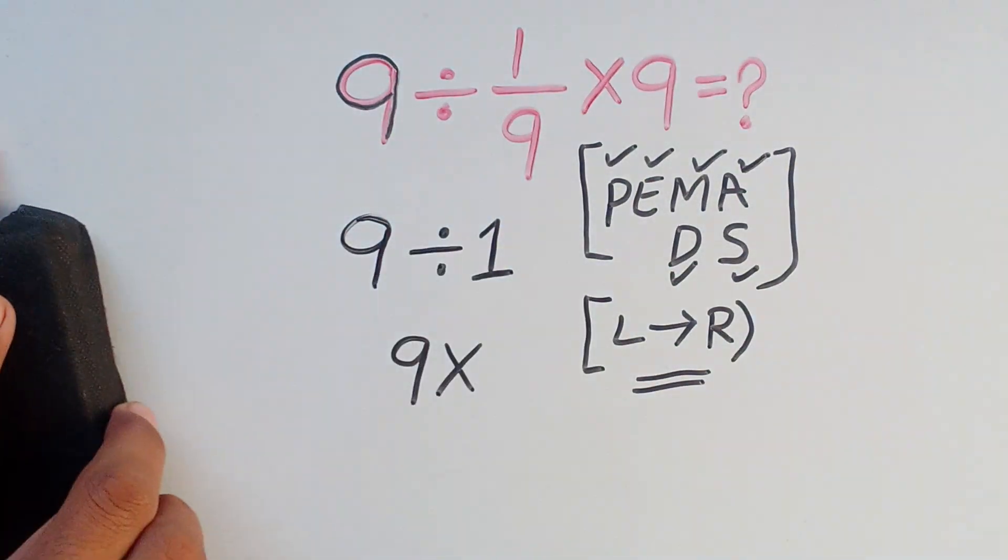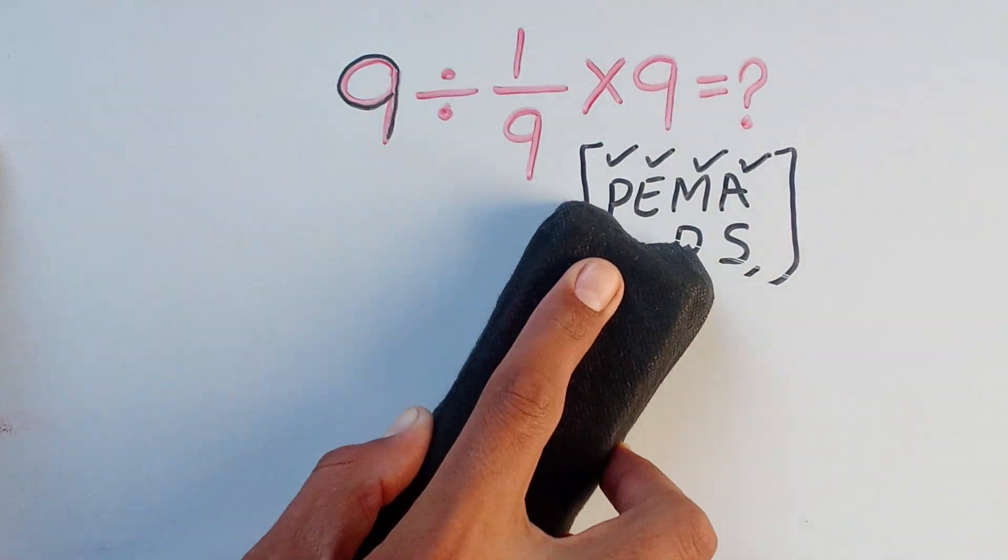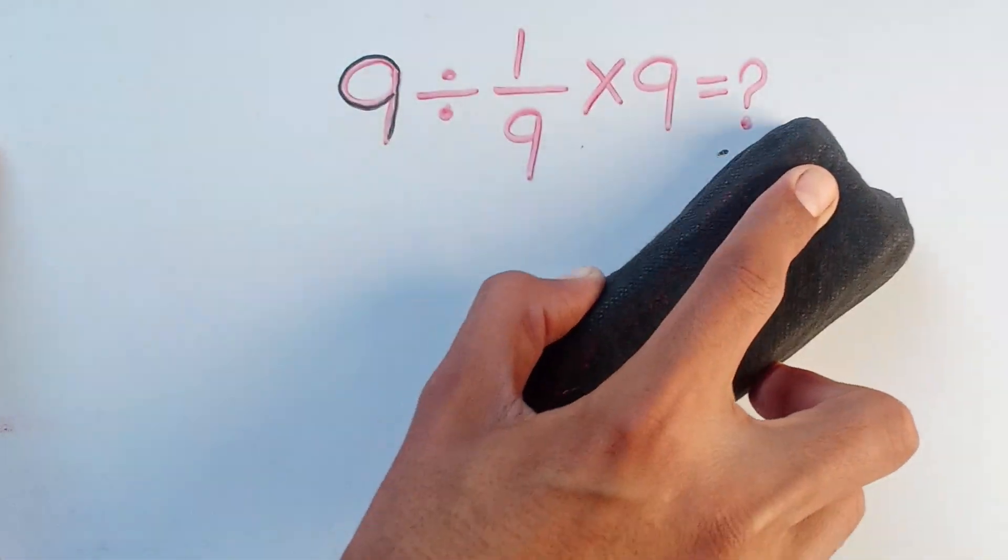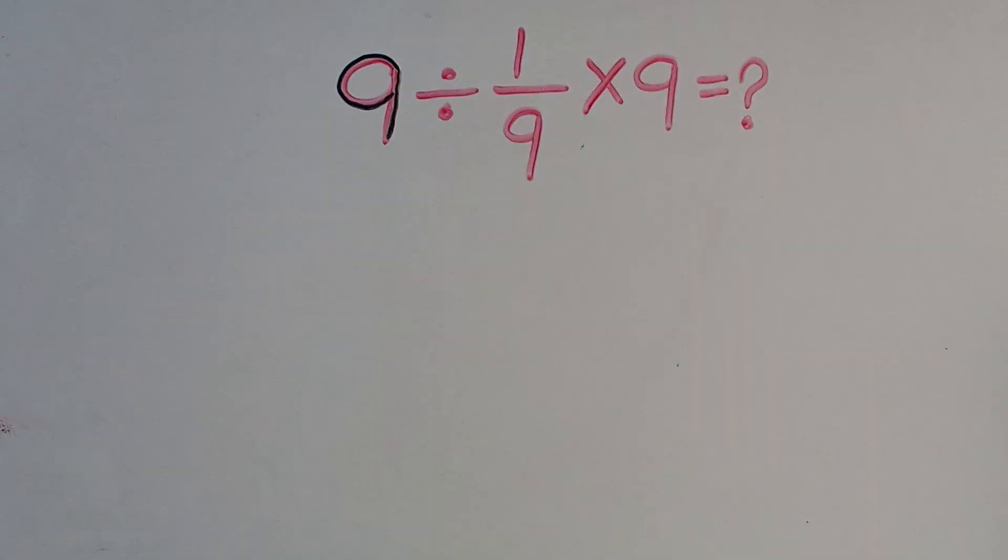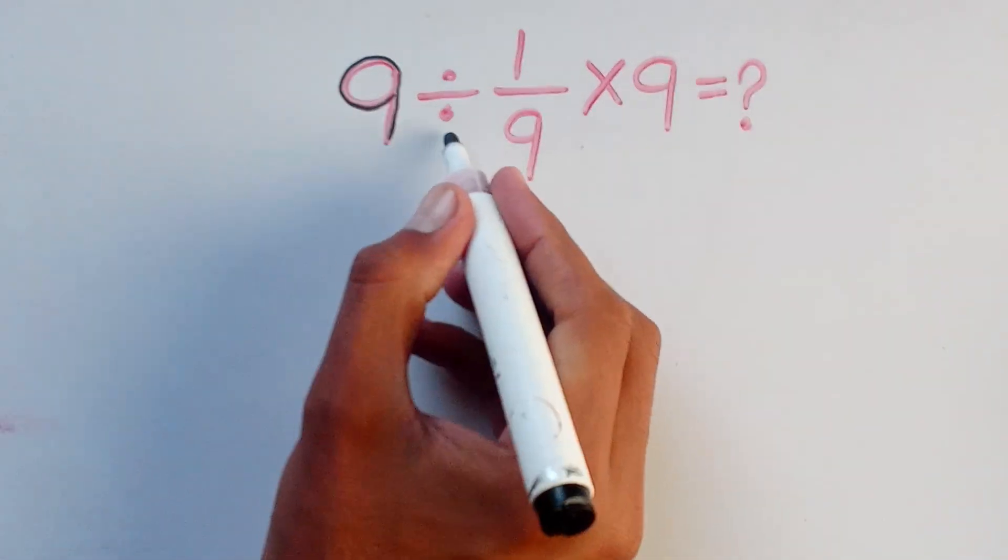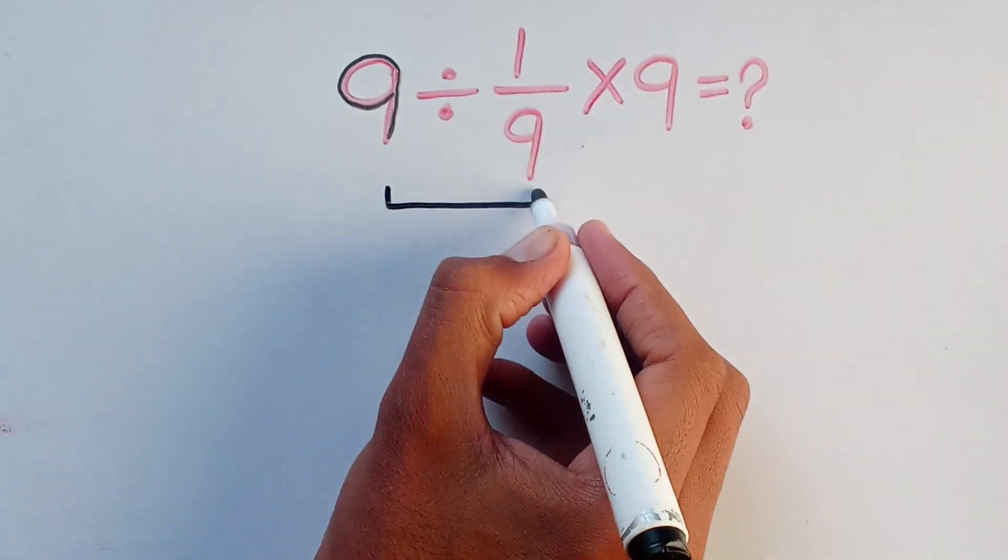Now, student, I can remove this wrong method and solve the question by correct method. So here, first we can solve this division. To solve this part...